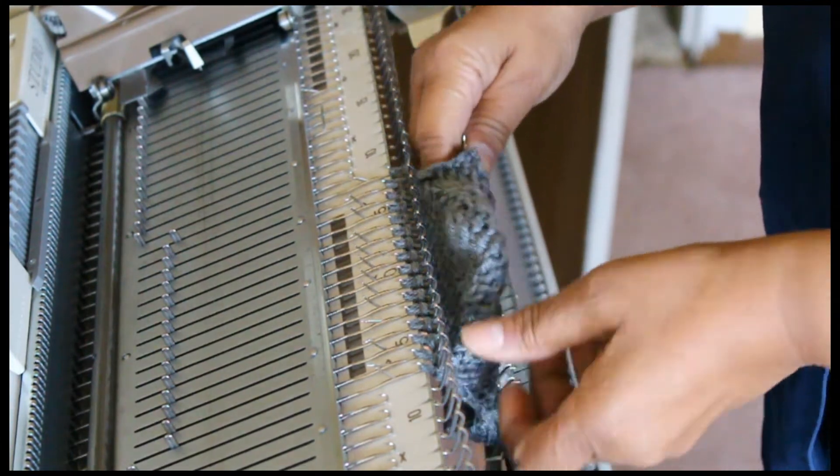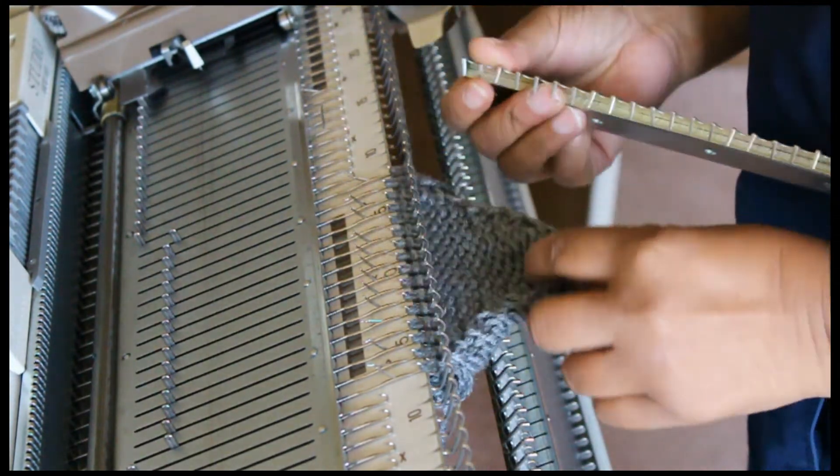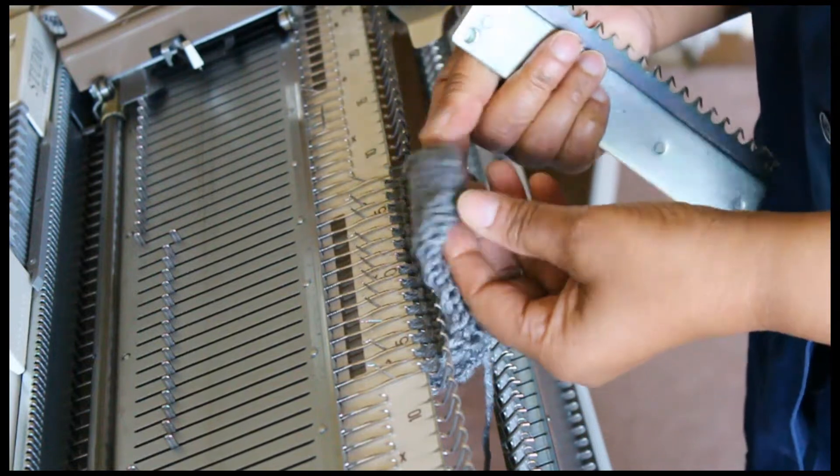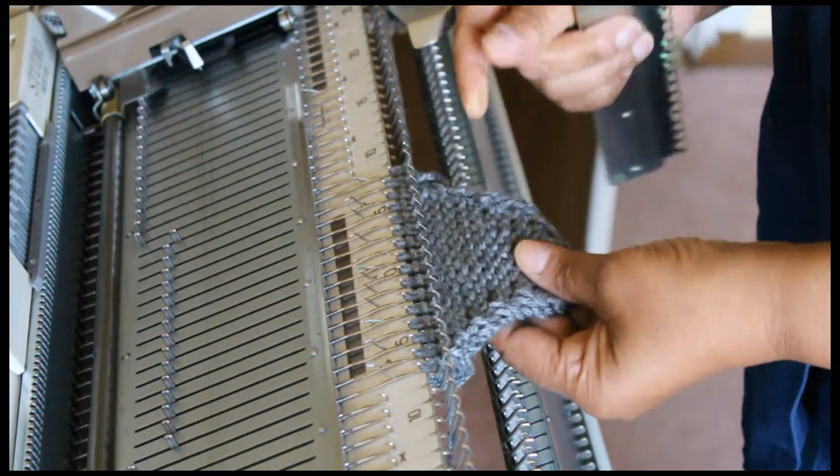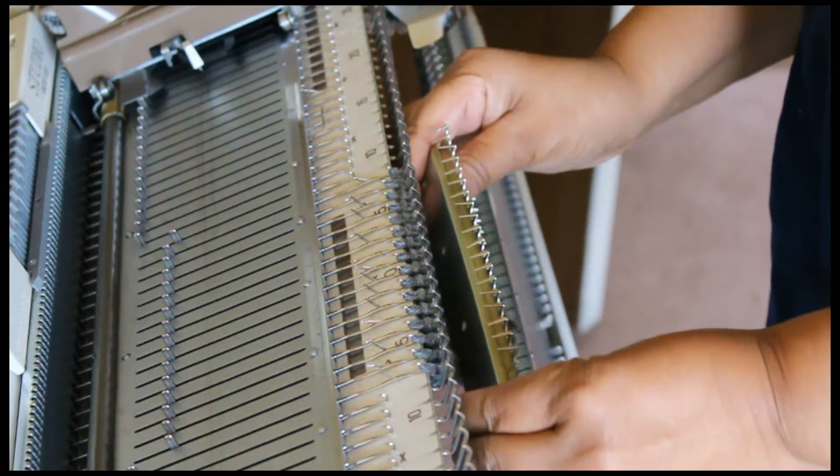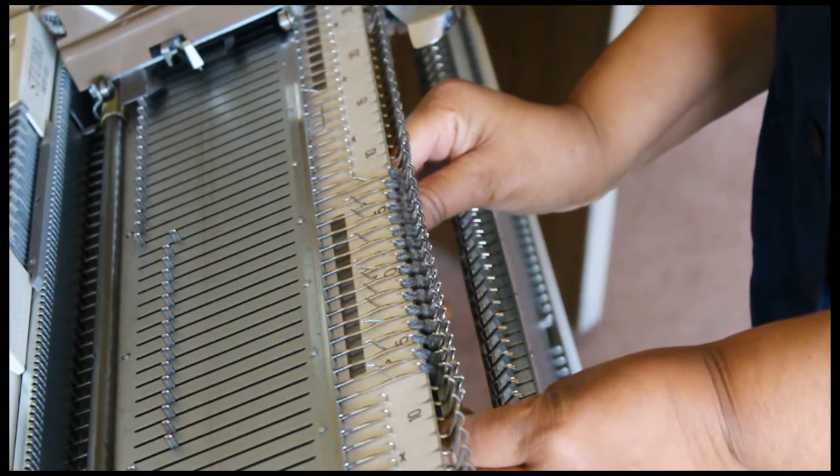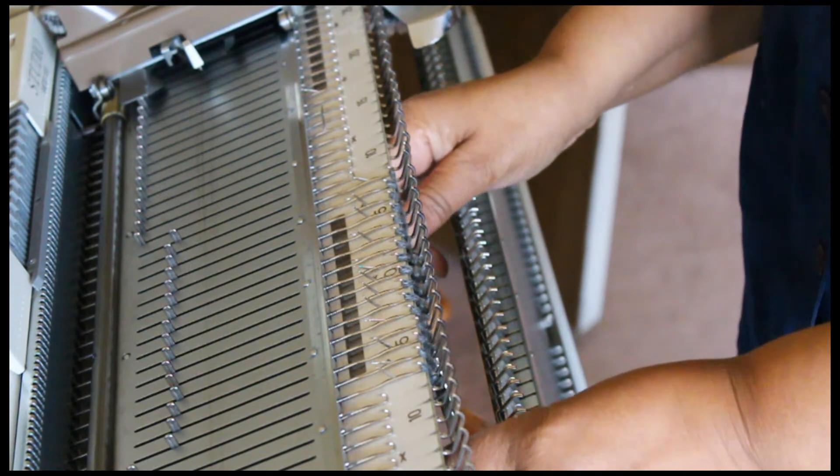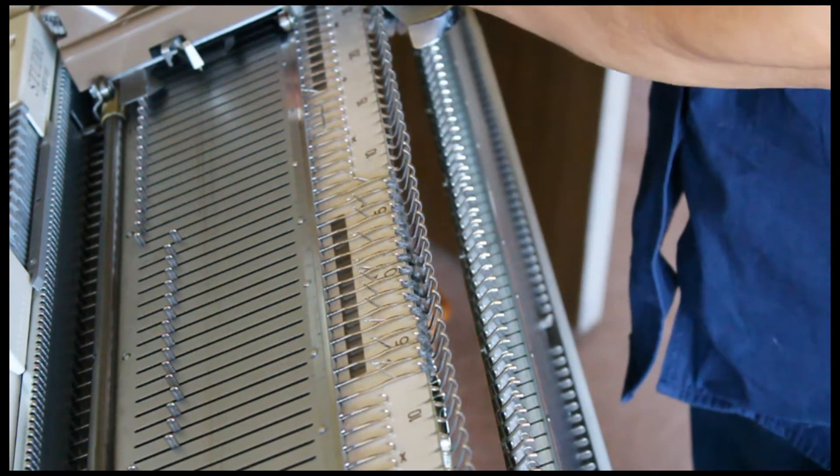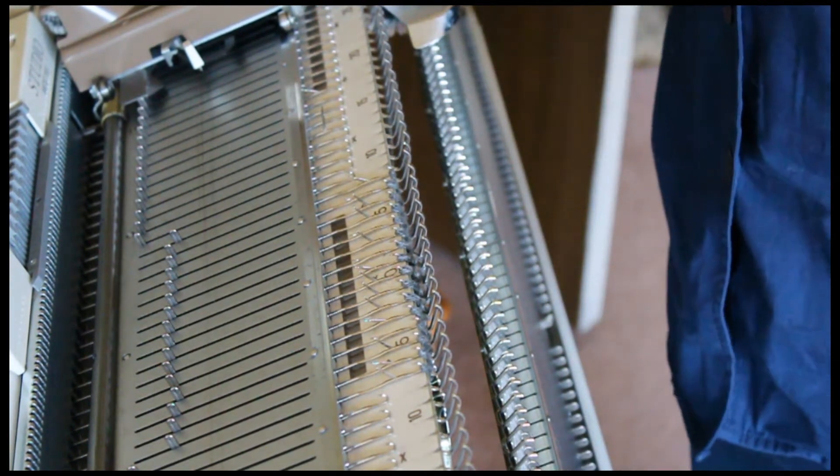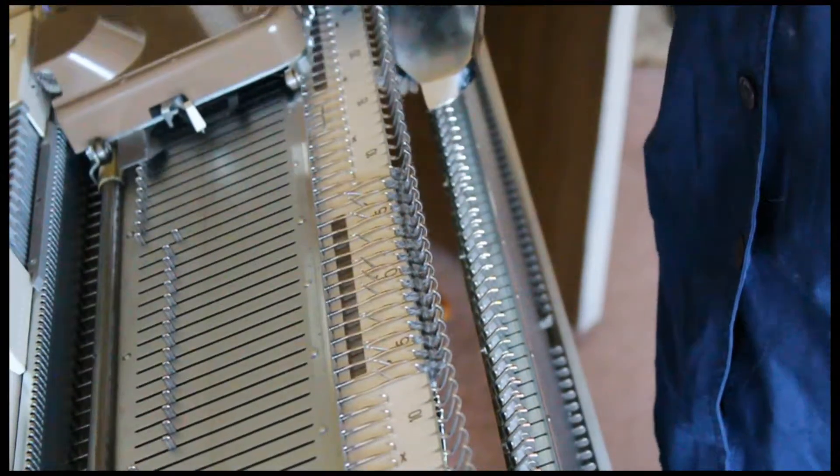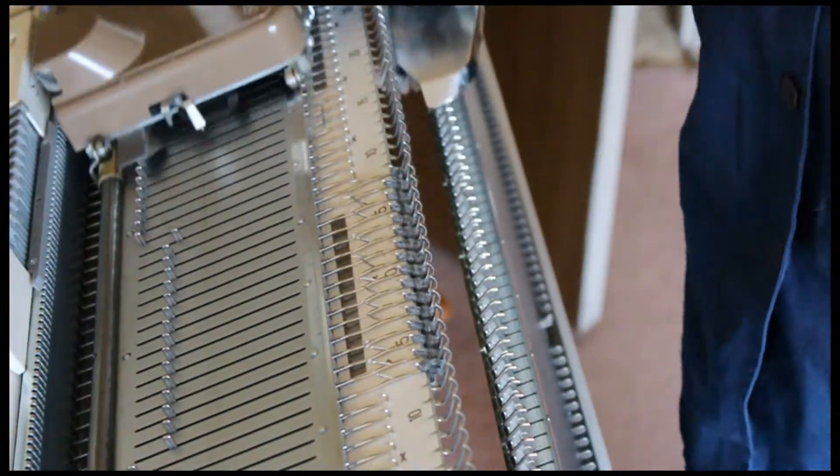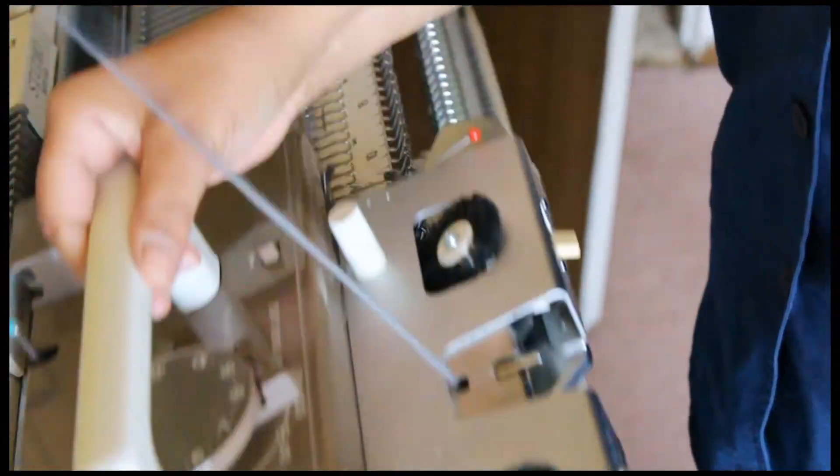Okay, that completes the heel. The next step is to knit the bottom foot 26 rows. This would be for a size foot of 7 to 8.